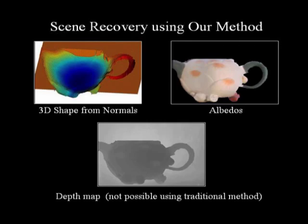Now we show the results of applying our algorithm to these images. The computed 3D shape is visually accurate and the scattering effects have been removed from the albedo map.